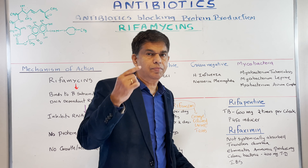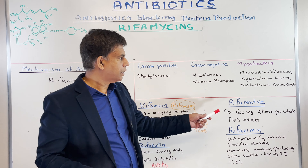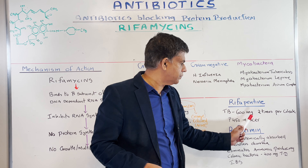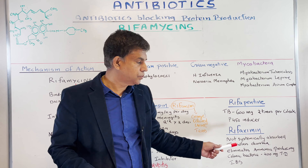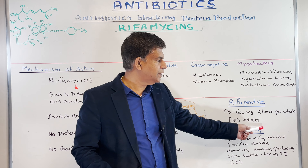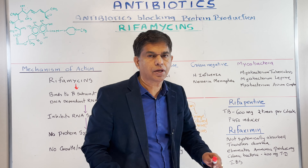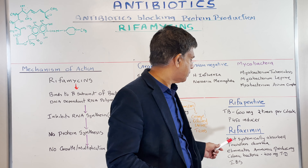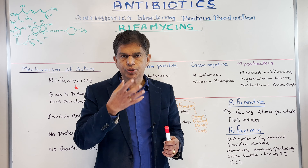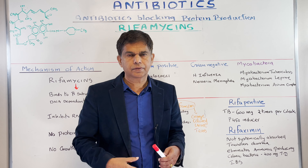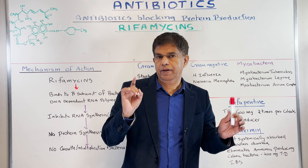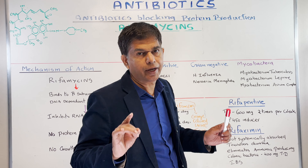Rifamycin also induces P450 enzymes in the liver, so the breakdown of the drug into metabolites is faster — you have to be careful about dosing. The next drug is rifabutin, used for Mycobacterium avium complex at 300 mg per day. It is a P450 inhibitor, so metabolism slows and the drug can stay in the system for a long time.